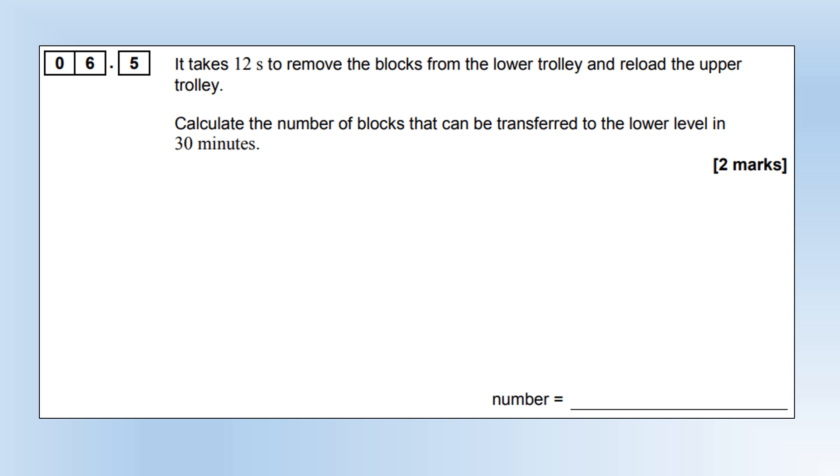It takes 12 seconds to remove the blocks at the lower trolley and reload. How many can we transfer in 30 minutes? It takes 12 plus 7.3 seconds for one trip, so dividing the 30 minutes by that tells us we can take 93 trips, which means each trip can transfer two blocks, giving us 186 blocks.